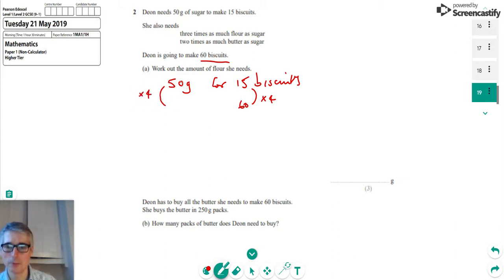So 50 times 4 is 200, so we know she needs 200 grams of sugar. We're also told that she needs three times as much flour as sugar, and that's actually the first part of the question.